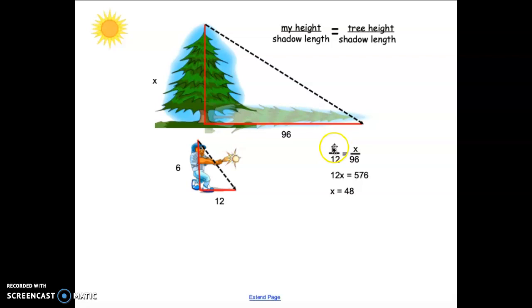So I set this up, my height over my shadow length. And then X, the height of the tree, over the length of the shadow. And that gives me 12X when I cross multiply, is equal to 576. Divide both sides by 12, and X is equal to 48. So the height of my tree is roughly 48 feet.